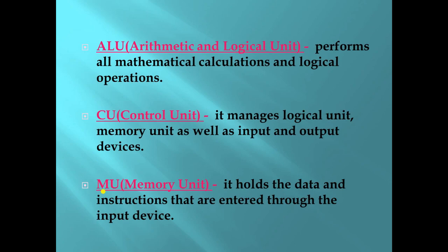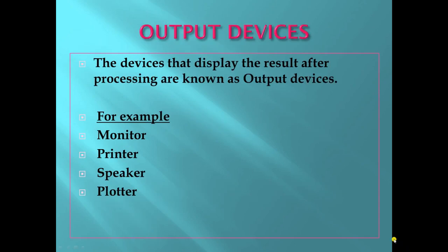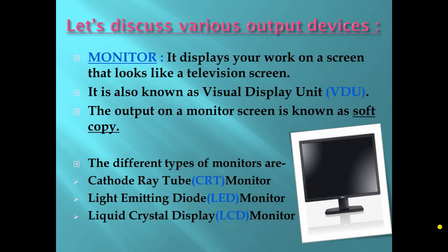Now let's discuss output devices. The devices that display the result after processing are known as output devices. For example, monitor, printer, speaker, plotter, and much more. The first output device is the monitor.